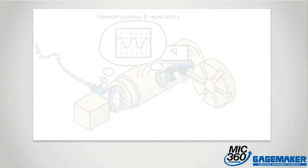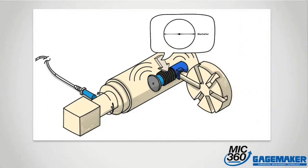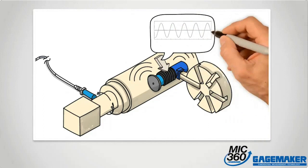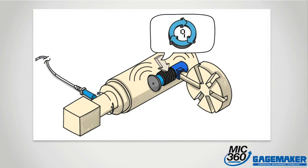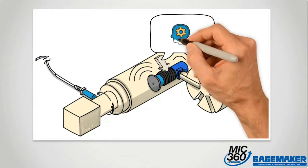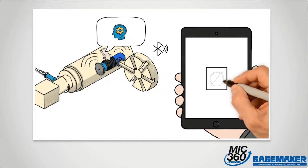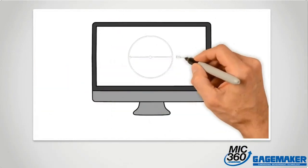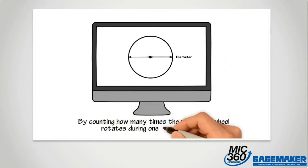The computer then takes into account all information received: the known measuring wheel diameter, the corresponding number of pulses per each wheel revolution, and the total number of pulses counted during one revolution of the part. The computer processes that information, calculates the part diameter, and sends it via Bluetooth to the tablet or CPU display. Ultimately, the computer calculates the diameter by counting how many times the measuring wheel rotates during one part revolution.